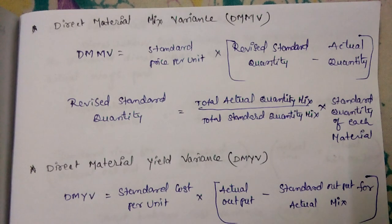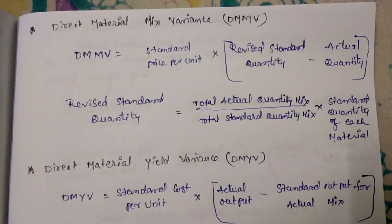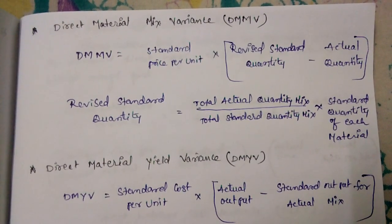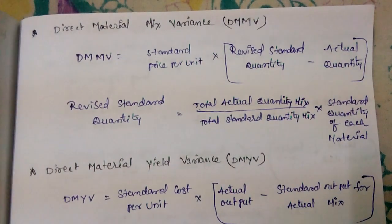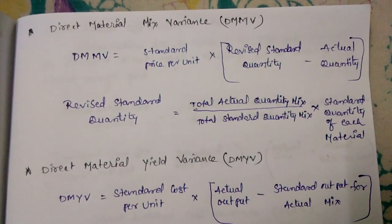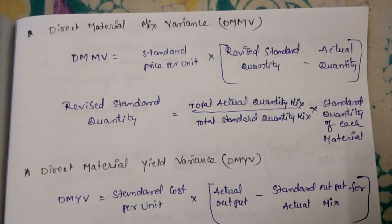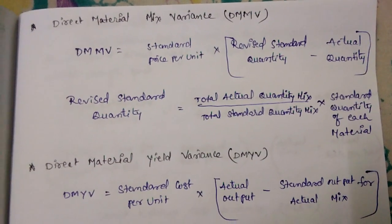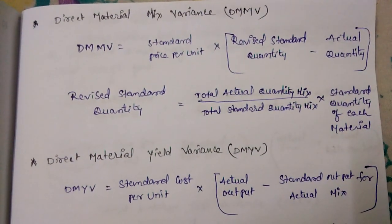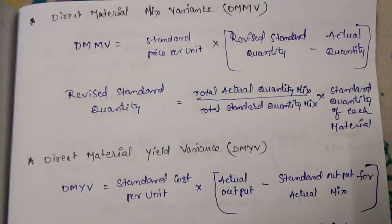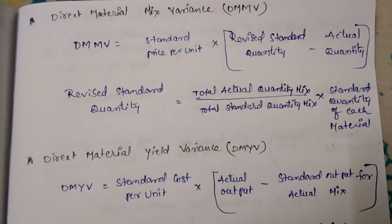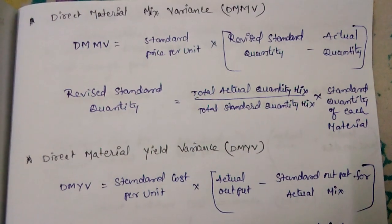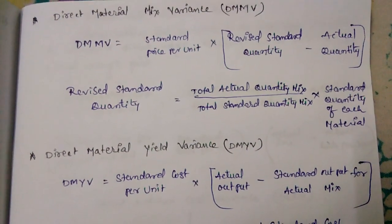Next is Direct Material Mix Variance, called DMMV. DMMV equals standard price per unit multiplied by revised standard quantity minus actual quantity. Here, revised standard quantity equals total actual quantity mix divided by total standard quantity mix, multiplied by standard quantity of each material.